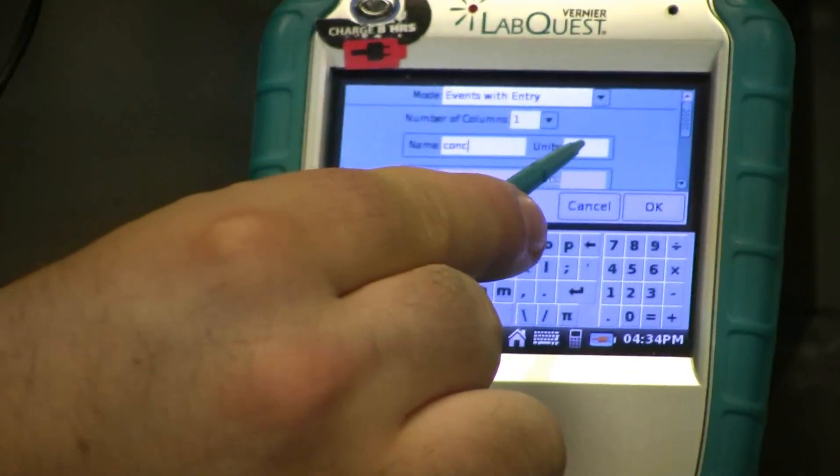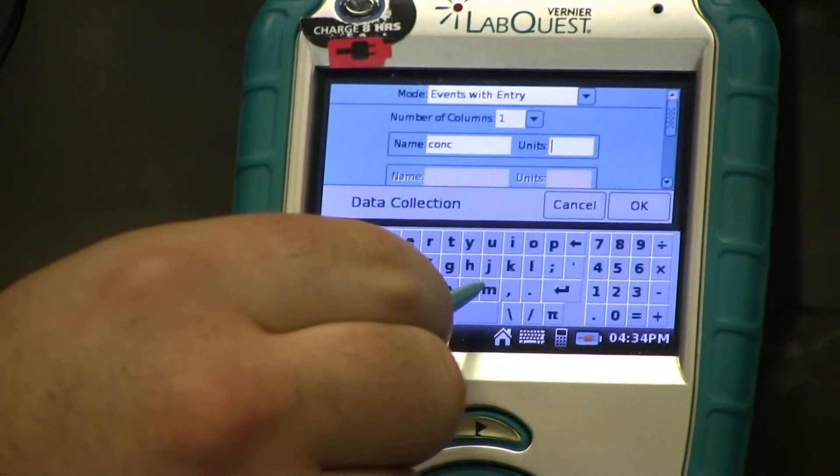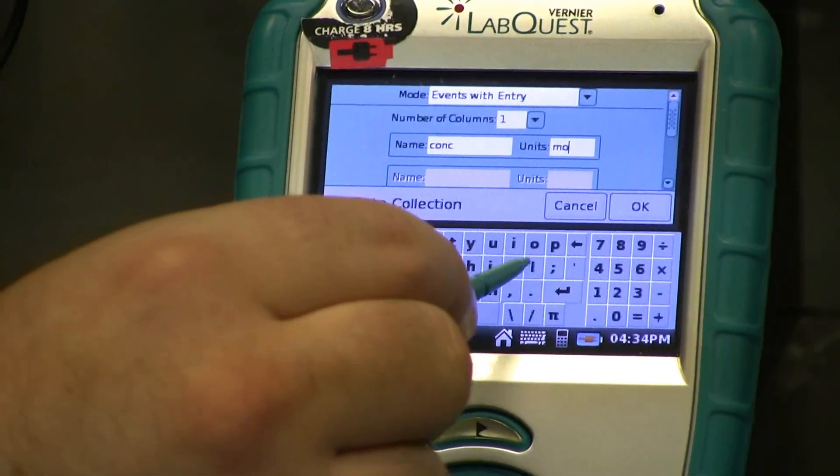In the Unit box, you want to click on this and enter moles per liter or an abbreviation of such.